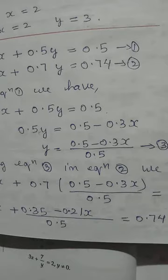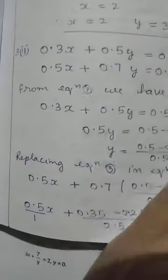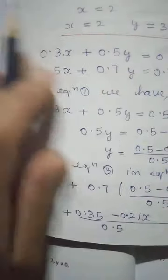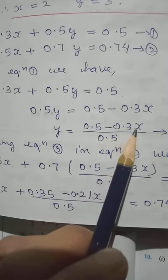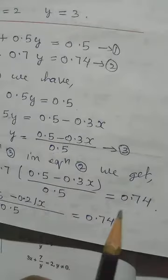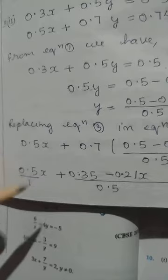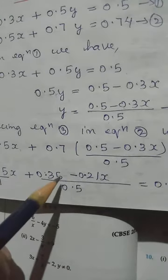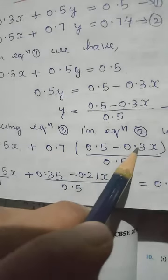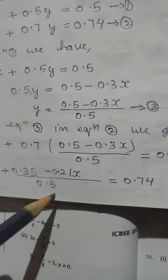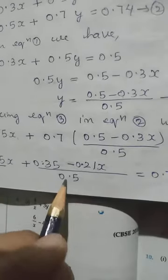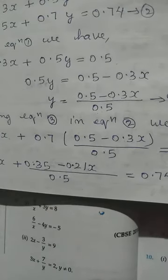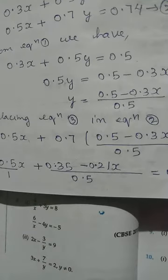Now we have to replace it in equation 2. How to replace? Not everything — only in place of Y we will put this value. So 0.5X, let it be, plus 0.7, let it be. Now in place of Y we will not write Y anymore; we will write with this value: 0.5 minus 0.3X divided by 0.5. Then this side still equals 0.74. Now we multiply: 0.7 into 0.3 gives 0.21 — two numbers after decimal. Then 0.7 into 0.3 gives 0.21. We have fraction, so we take LCM of 1 and 0.5, which will be 0.5. In order to remove the denominator, we multiply each side by the LCM, that is 0.5.